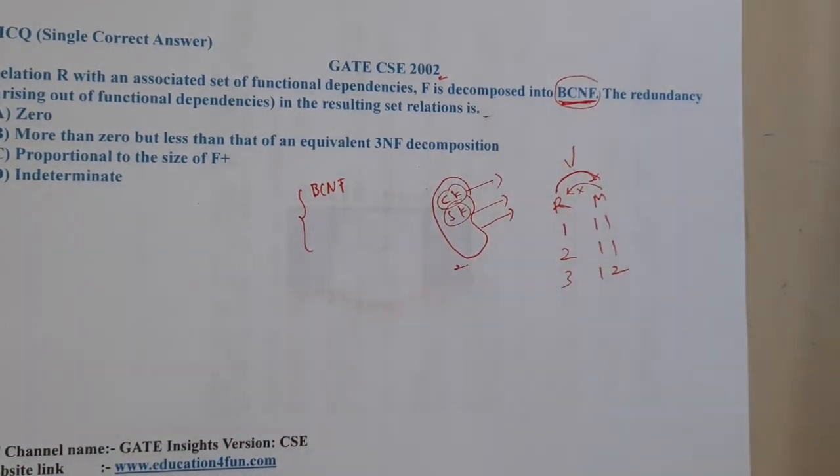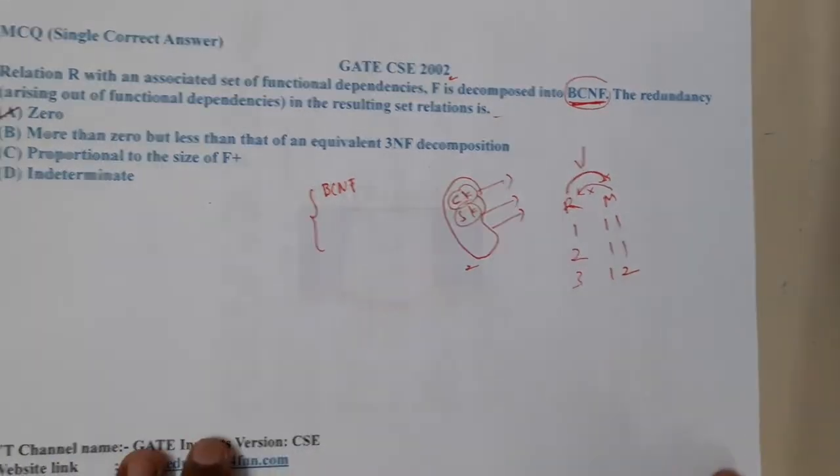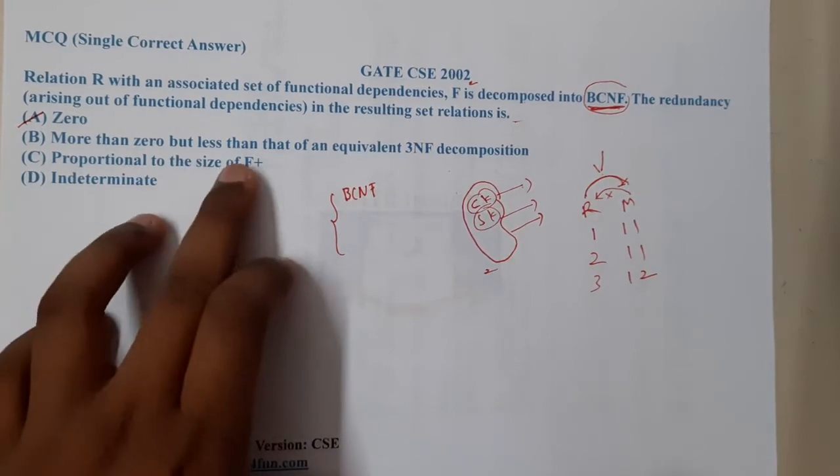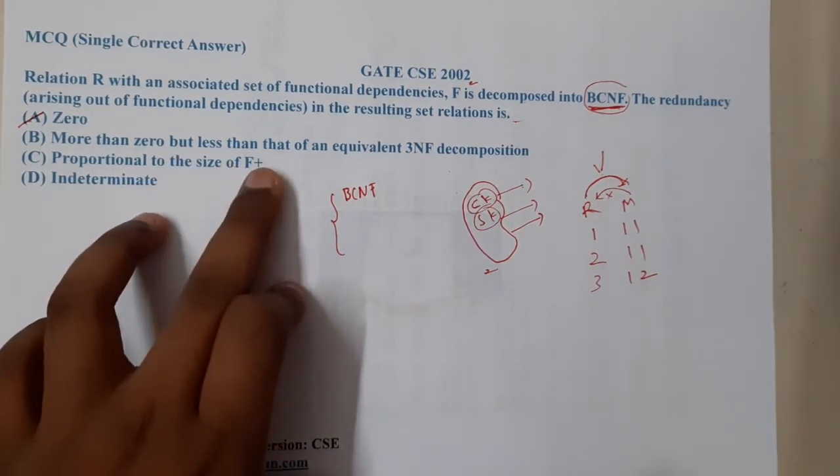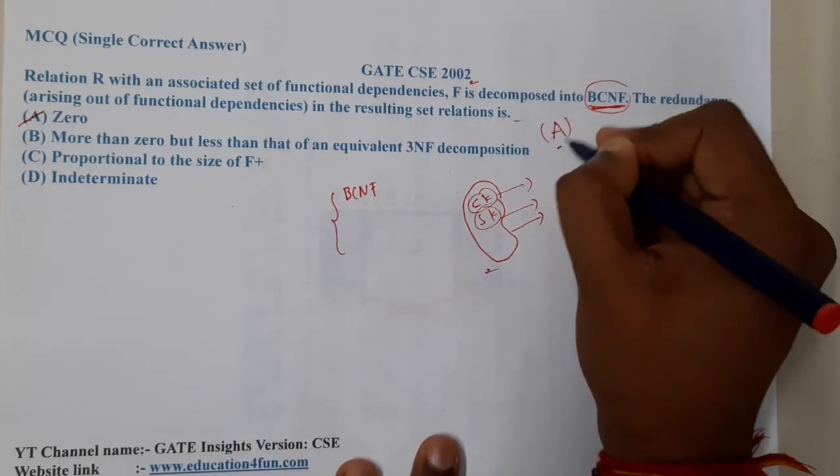With that understanding, I think we can conclude that there will be no more things which should be removed. Option B says that more than 0 but lesser than that of equivalent to 3NF - that's also absolutely wrong. So most probably A should be the correct answer. This is also a theoretical question.